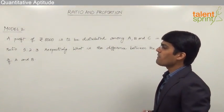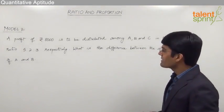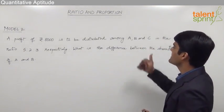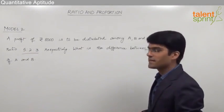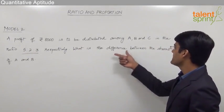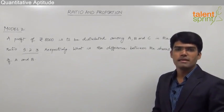The question here is a profit of rupees 8000 is distributed among A, B and C in the ratio 5 is to 2 is to 3 respectively. What is the difference between the shares of A and B?